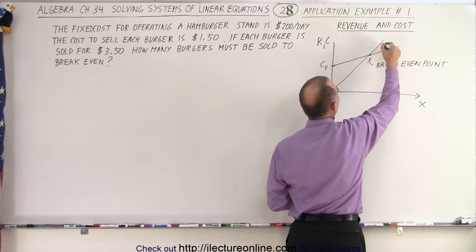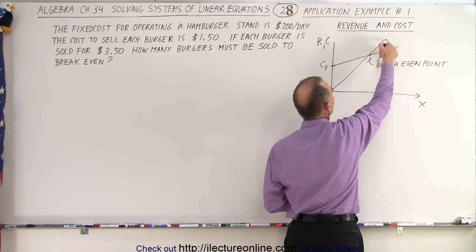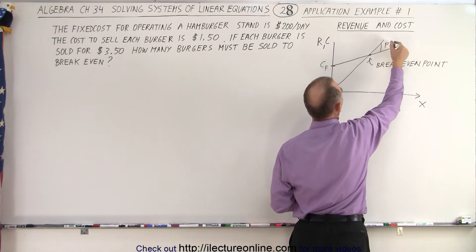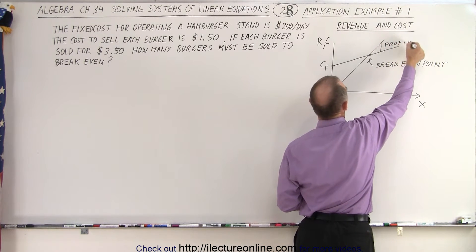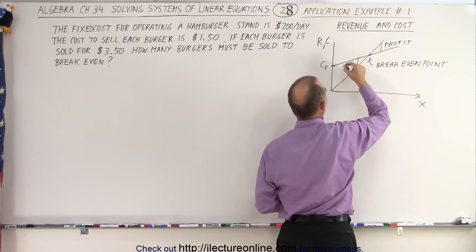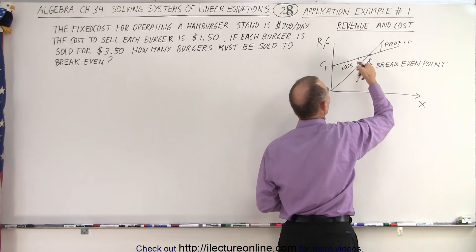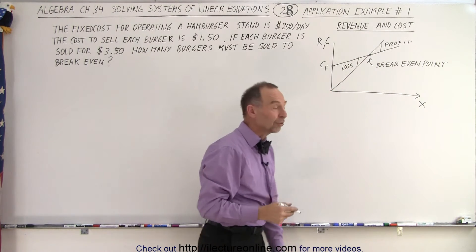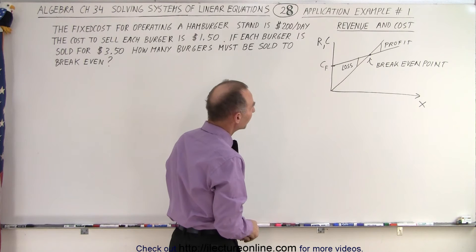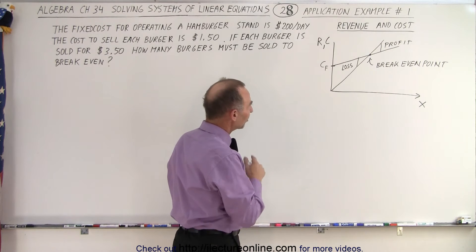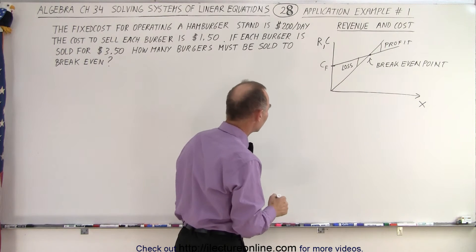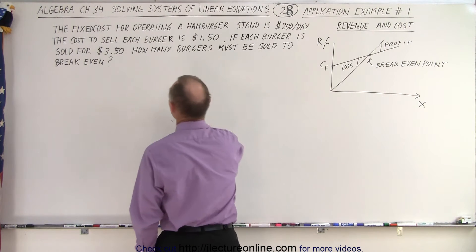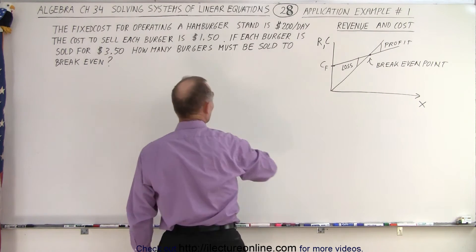So this is called the break-even point. And here you're making a profit because the revenue is greater than the cost. So this is profit. And here you would be making a loss because the cost is greater than the revenue. So if you're interested in finding the break-even point, this is how we do that.